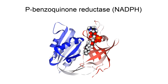This enzyme belongs to the family of oxidoreductases, specifically those acting on NADH or NADPH with a quinone or similar compound as acceptor. The systematic name of this enzyme class is NADPH-P-benzoquinone oxidoreductase. This enzyme participates in gamma-hexachlorocyclohexane degradation.